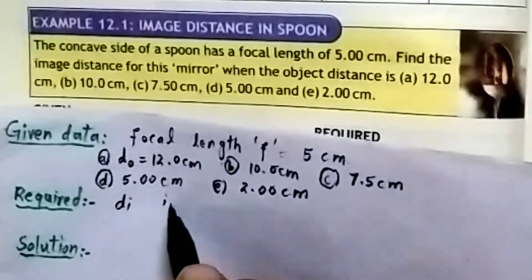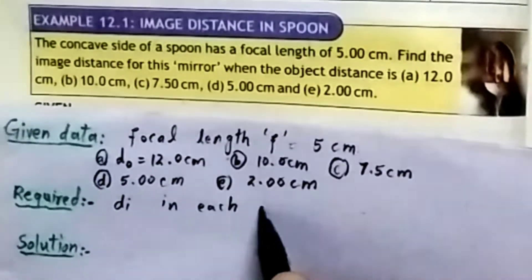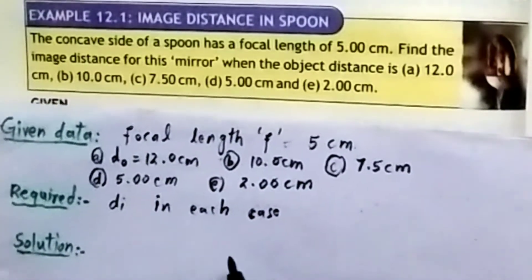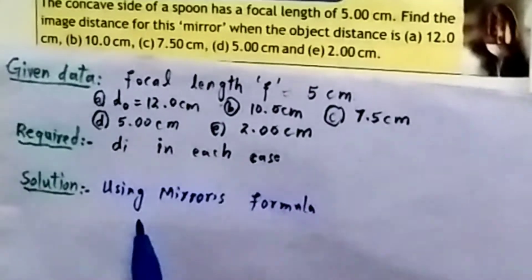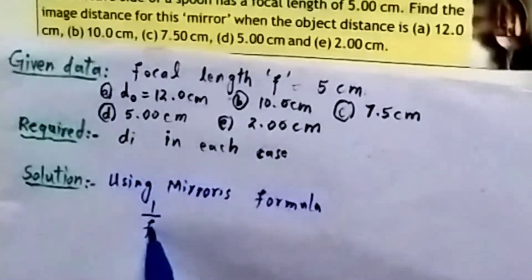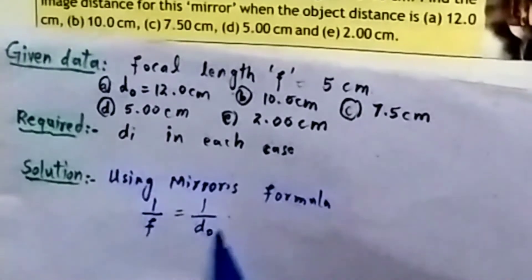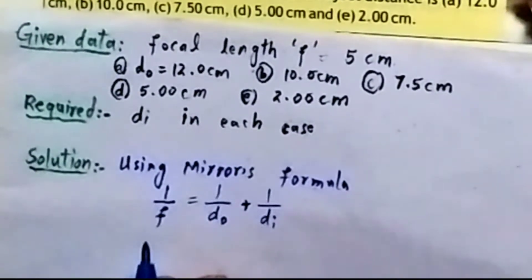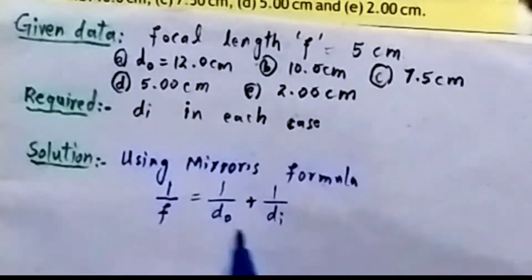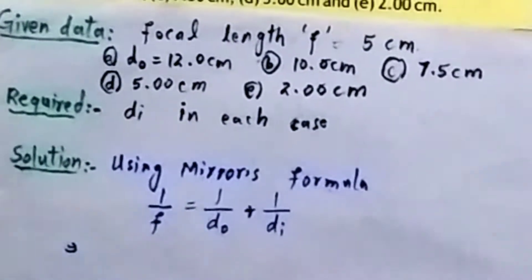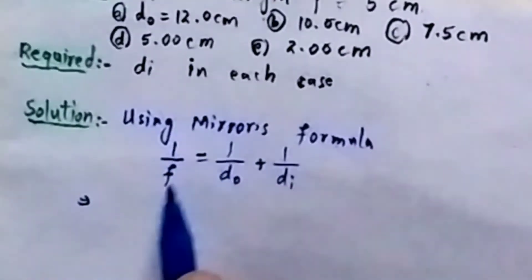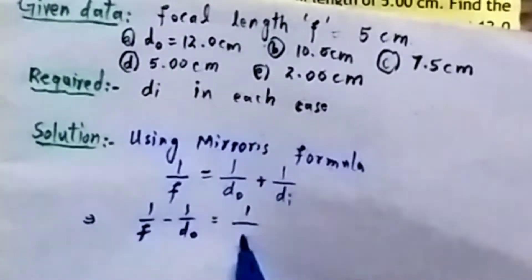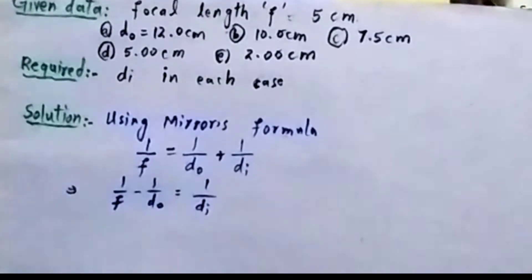We are required to use the mirror formula. The mirror formula is: one over f is equal to one over d-o (distance of object) plus one over d-i (distance of image). From this formula we need to find d-i for each case, given d-o. Rearranging: one over d-i equals one over f minus one over d-o.